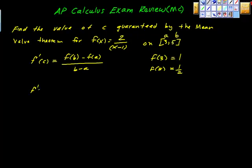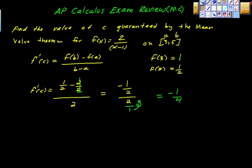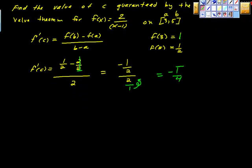So we have f'(c), this guaranteed value is (1/2 - 1) over (b - a). I'm going to put it in as -2/2 over 2. B minus A, 5 minus 3 is 2. That gives us -1/2 over 2. This is a complex fraction. We multiply the numerator by the reciprocal of the denominator, so -1/2 times 1/2 = -1/4. So we have this value here that we're going with.